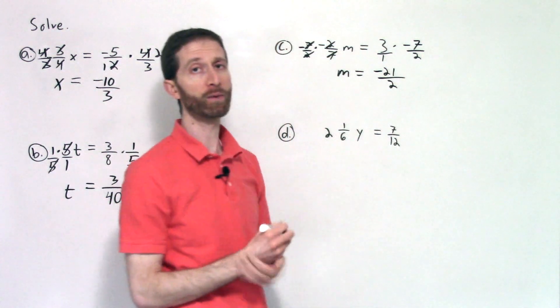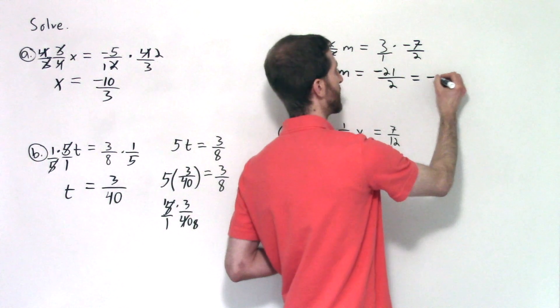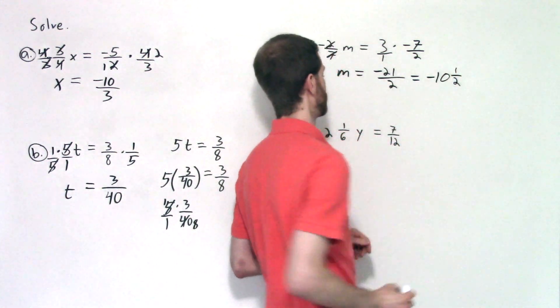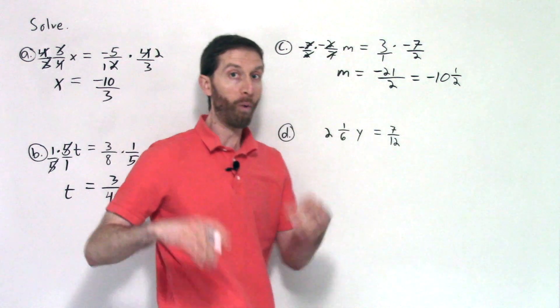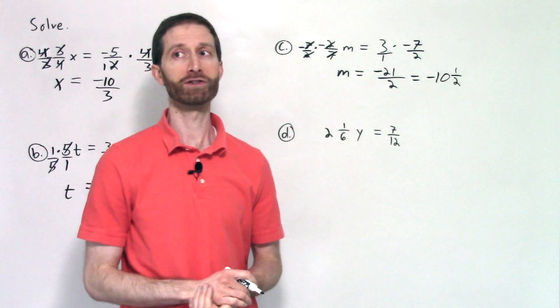So your final answer, negative 21 halves, or if your teacher needs you to, you can rewrite that as negative 10 and one half. Last but certainly not least, what happens when there's a mixed number involved? Change it to an improper fraction. That's what I've been grooving you to do in some of the previous videos.